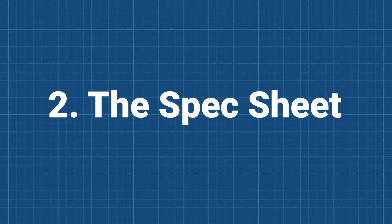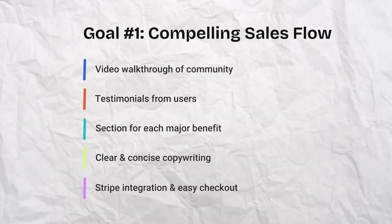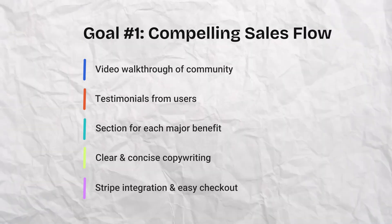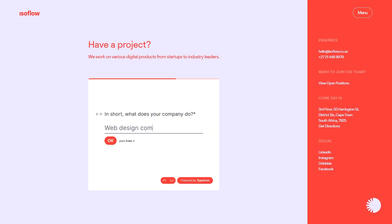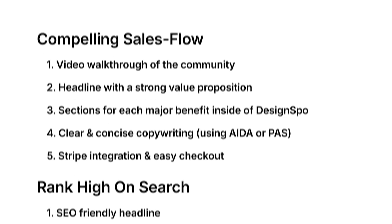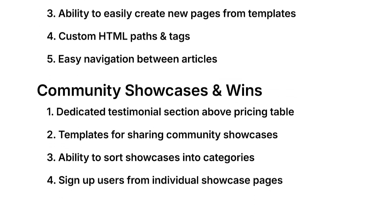Introducing the spec sheet. The spec sheet is basically a list of requirements we'll need to build our website and meet our goals. For rebuilding DesignSpo, I'll want a video walkthrough of the community, as well as testimonials from members and a bunch of other features. If you build software, you probably want a demo. And if you're in professional services, you probably want a contact form. Basically, we're creating a list of everything we'd want on our website. From there, we can figure out what software we need to use and what sections we need to have. This makes building a website 10 times easier because we know exactly what we need to build before we have to do the hard work of actually developing the site.